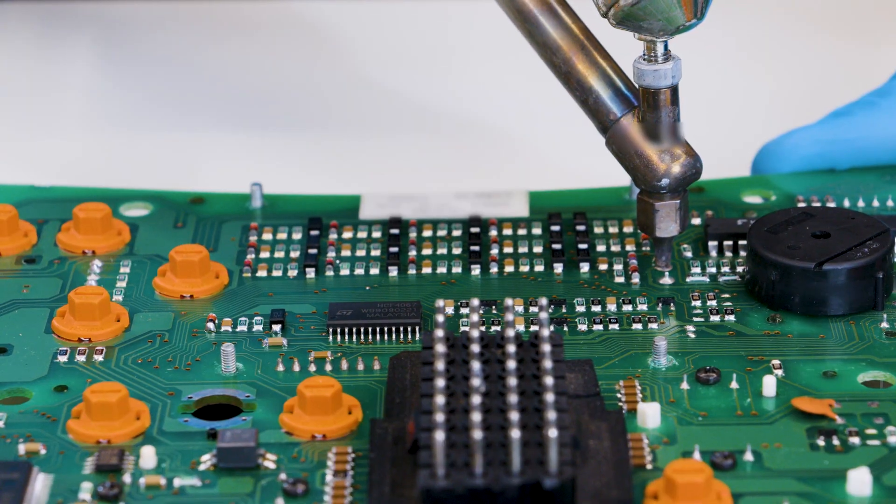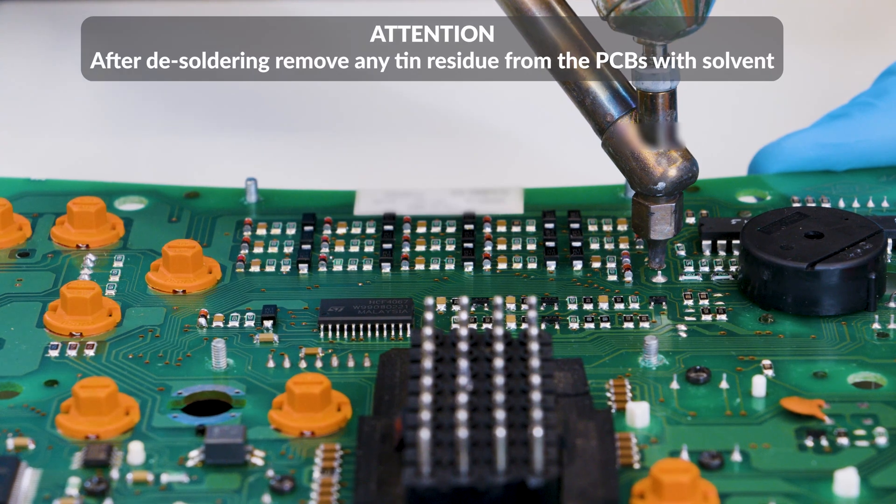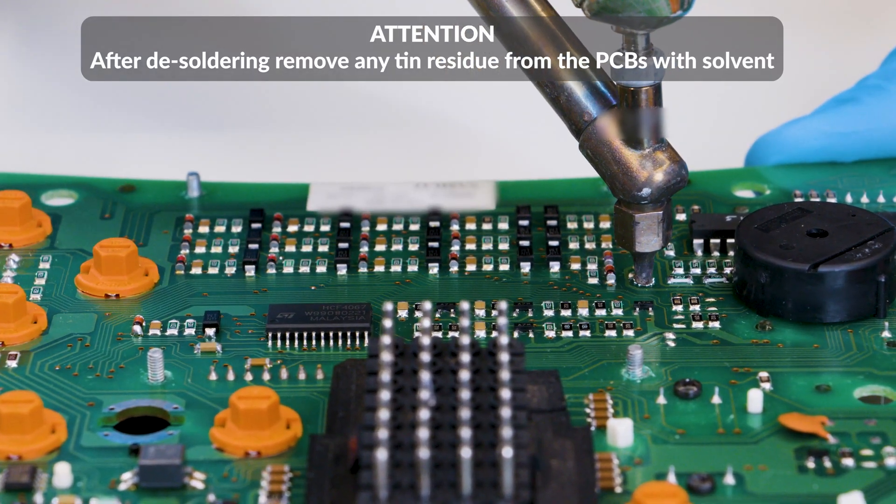With a vacuum-desoldering iron, desolder the contacts of the pin headers connecting the two PCBs, as shown.